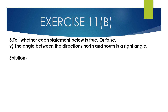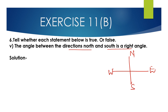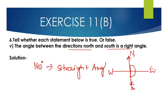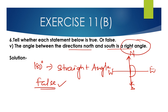Fifth bit: 'The angle between the directions north and south is a right angle.' North is directly opposite to south, and the angle between them is 180 degrees, which is a straight angle — not a right angle. So this statement is false; the angle between north and south is a straight angle.